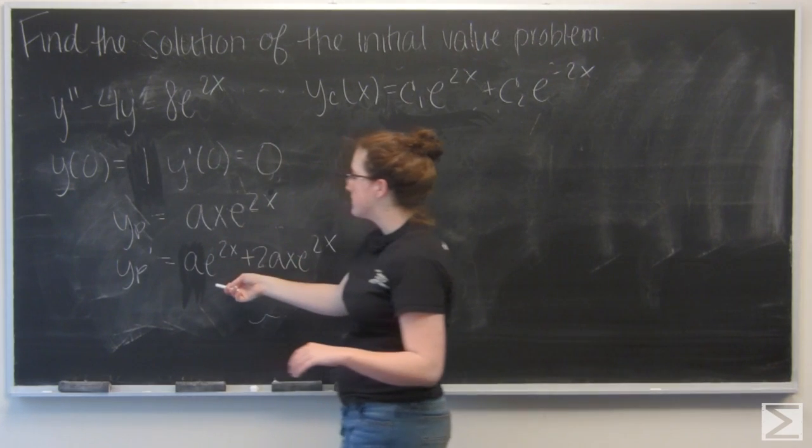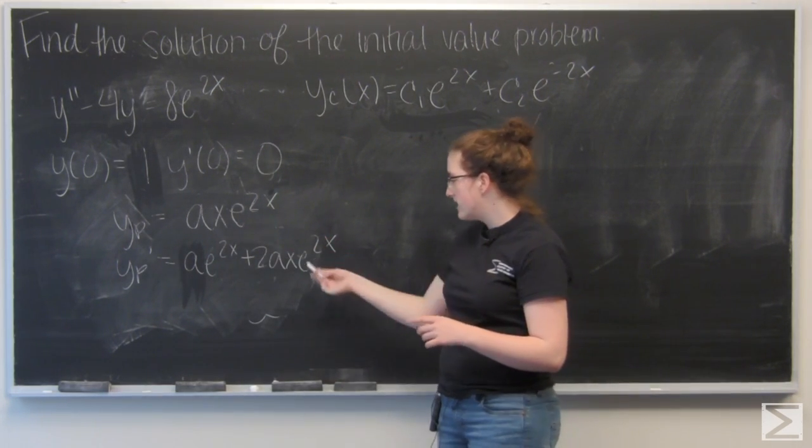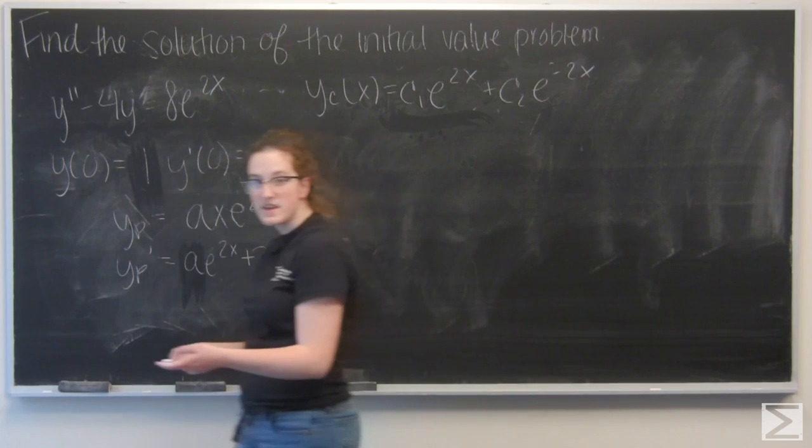Its first derivative is ae to the 2x plus 2axe to the 2x. Now let's find the second derivative.